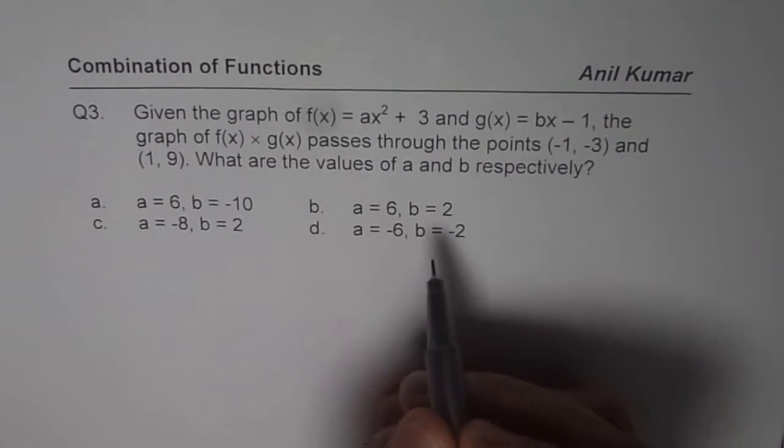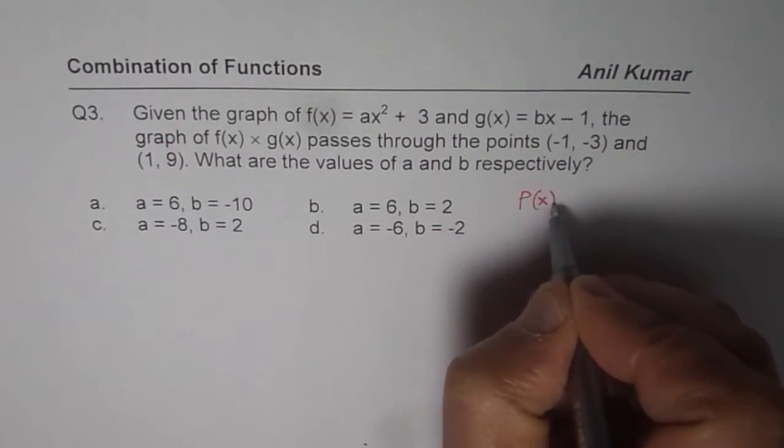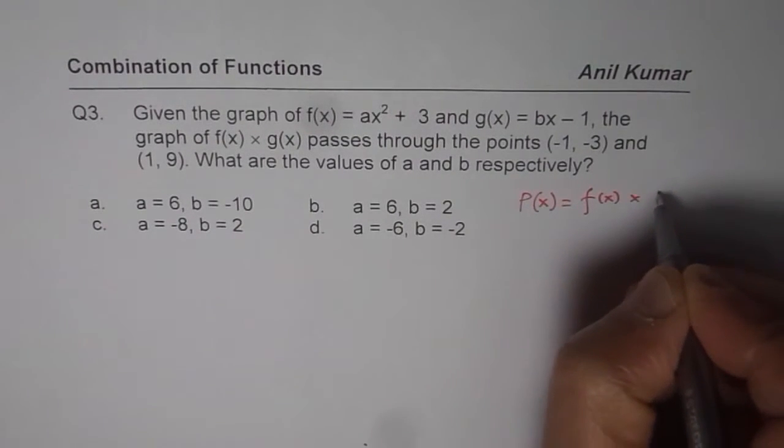Now, what you need to do here is, first let us find the product of these 2 functions. That means, find p of x which should be equal to f of x times g of x.